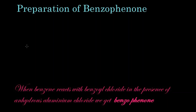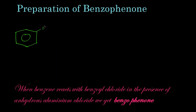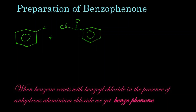In this video we are going to learn the preparation of benzophenone. We are going to prepare benzophenone by treating benzene with benzoyl chloride. Let's write the structure of benzene, and here is benzoyl chloride: Cl-C double bond O.